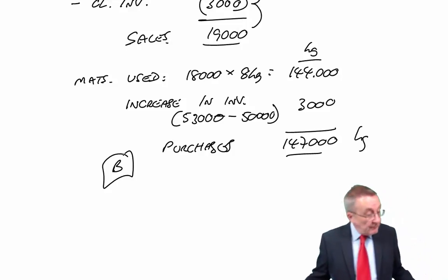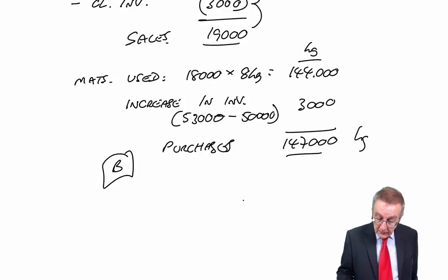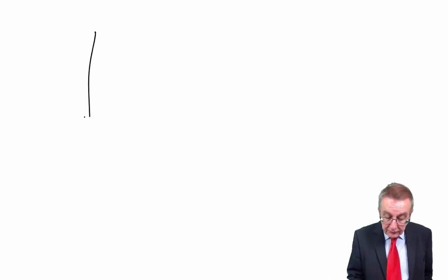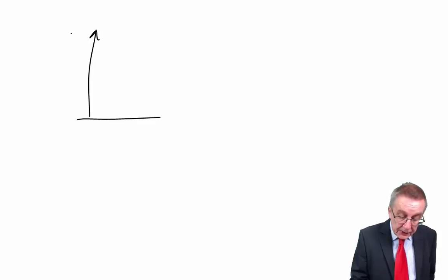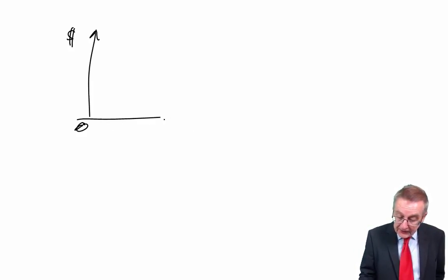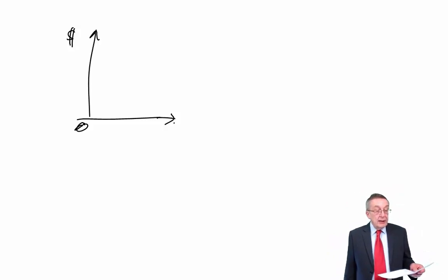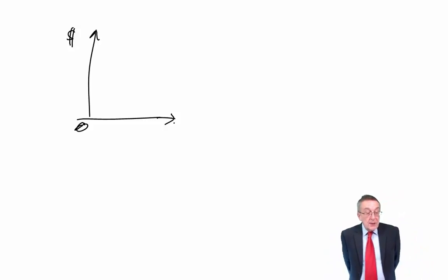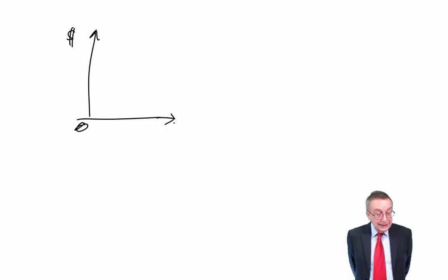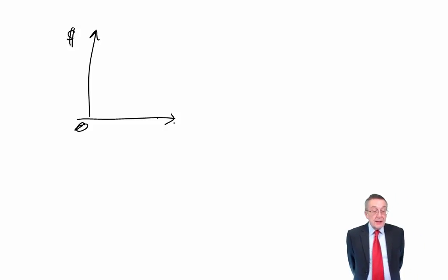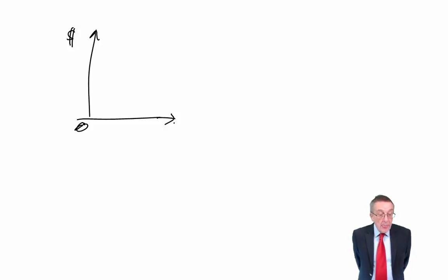Number eight. Which of the following graphs depicts the total cost of raw materials for a period? The graph has dollars on the vertical axis. Up to a given level of activity in each period, the purchase price per unit of a raw material is constant. After that point, a lower price per unit applies, both to further units purchased and also, retrospectively, to all units already purchased.